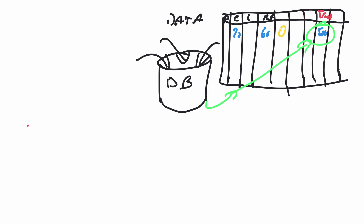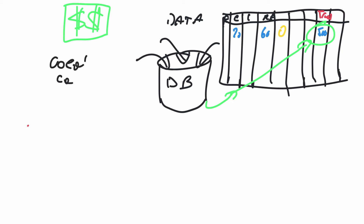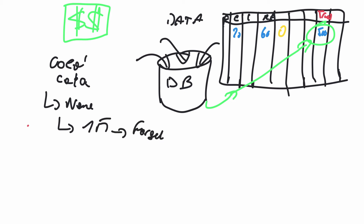I have this huge database with all these data points on people. How did I make money? The money came from companies like Coca-Cola. For example, Coca-Cola launched a campaign — like one of those campaigns where you put your name on the bottle — and they collected maybe 1 million emails. Then they forget about it, because the person in charge was supposed to do something with those emails and didn't.